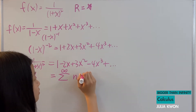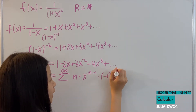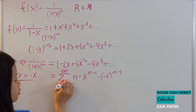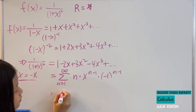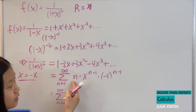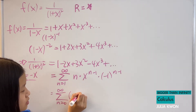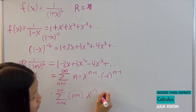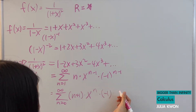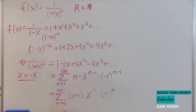The power series can be written as the sum of n times x to the power of n minus 1 times negative 1 to the power of n minus 1, starting when n equals 1. But if we want to start the n value at 0, then we add 1 to all the n values. So we would have n plus 1 times x to the power of n, times negative 1 to the power of n, starting at n equals 0. These two forms are exactly equivalent.